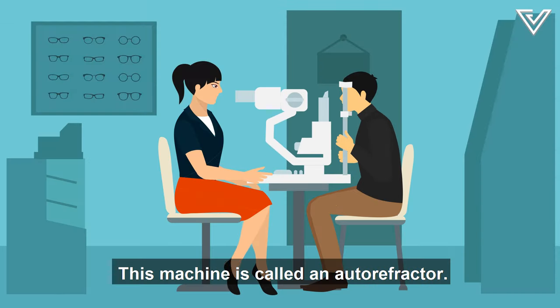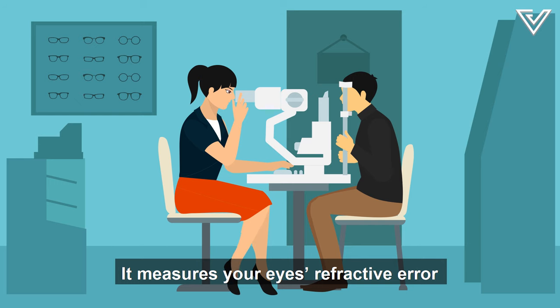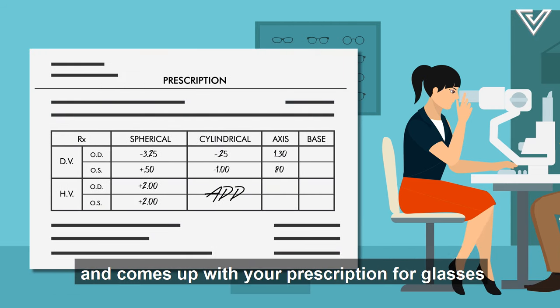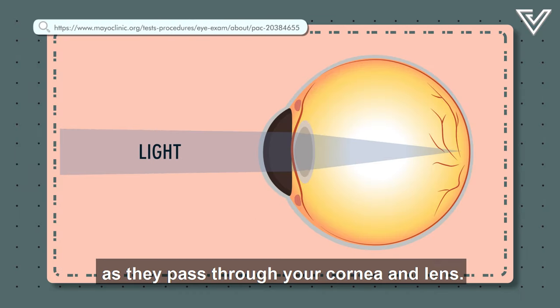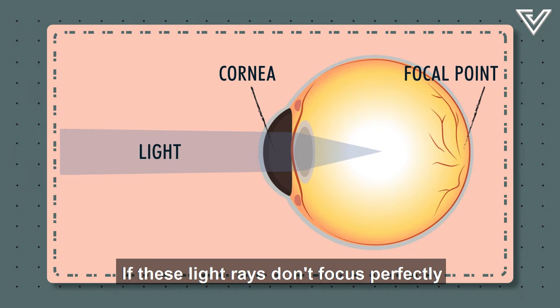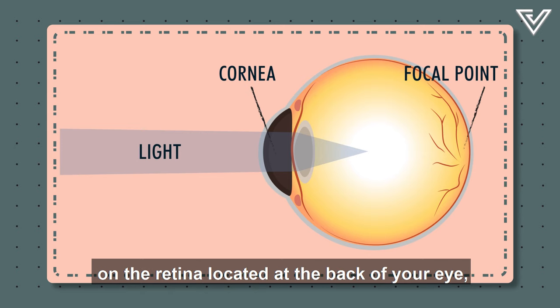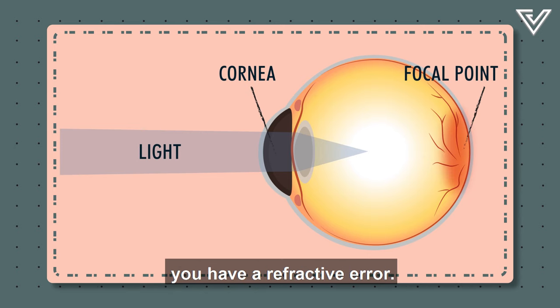This machine is called an auto-refractor. It measures your eye's refractive error and comes up with your prescription for glasses by looking at how light waves change as they enter your eye. Light waves are bent as they pass through your cornea and lens. If these light waves don't focus perfectly on the retina located at the back of your eye, you have a refractive error.